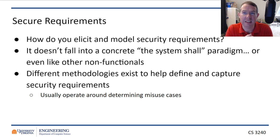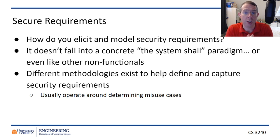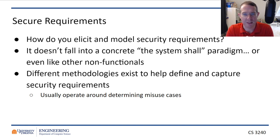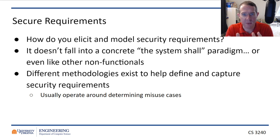Usability is a little harder — 'it needs to look nice.' Accessibility is more specific: for people who are colorblind, anytime something is denoted by a color, you also have an icon that means the same thing. So there are ways we can handle non-functionals. But security is tougher — what do you say during requirements? You can frame it in terms of confidentiality, integrity, and availability: only authorized users see proper data, the system needs to not be down. But how do we get specific for your system?